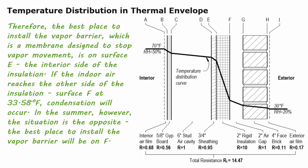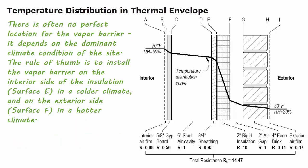In the summer, however, the situation is the opposite, and the best place to install the vapor barrier will be on surface F. So there is often no perfect location for the vapor barrier — it depends on the dominant climate condition of the site. The rule of thumb is to install the vapor barrier on the interior side of the insulation, surface E, in a colder climate, and on the exterior side, surface F, in a hotter climate.